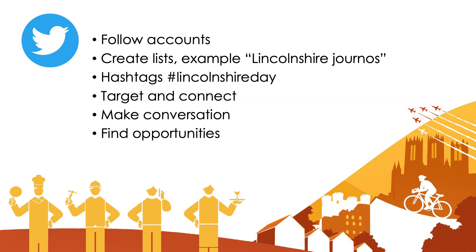There are lots of different things you can do with Twitter. You can follow accounts — similar to Facebook adding a friend, but you don't need permission, you can just follow. You can also create lists, which are really helpful. For example, you could create a list called 'Lincolnshire journalists' — a list of people you've found on Twitter who are journalists within Lincolnshire. That's really helpful if you've got a story you want to send out to journalists.